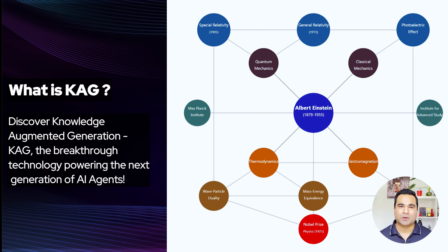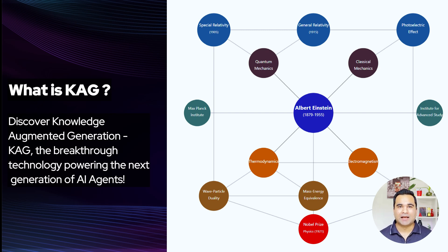Let's say you ask: Who influenced Albert Einstein, and what awards did they win? An AI agent using KAG can trace the connections and give you a precise answer. It's like having a map of knowledge that the AI agent can navigate.